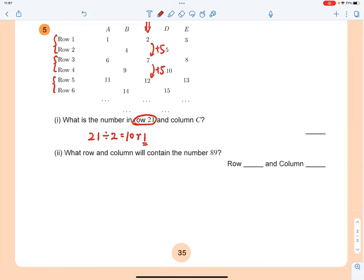So the number will be the 11th number in column C. Can we get the general term of the arithmetic sequence in column C? Yes, we can. You got 2, 7, 12.